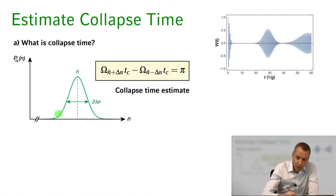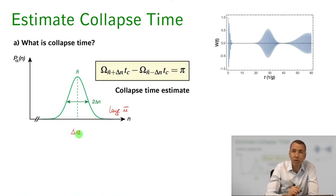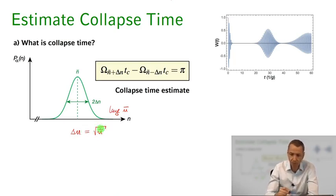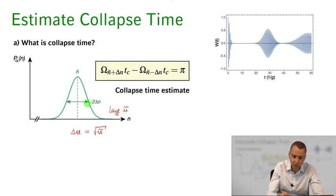For our coherent state, for large n-bar, we can approximate the Poissonian distribution by a Gaussian with average photon number n-bar and standard deviation Δn = √n-bar. The condition for the collapse is that the phases of the Rabi oscillations run out of phase by pi. We take the width of the distribution at n-bar ± Δn, and when those Rabi oscillations run out of phase by pi we have the collapse phenomenon.